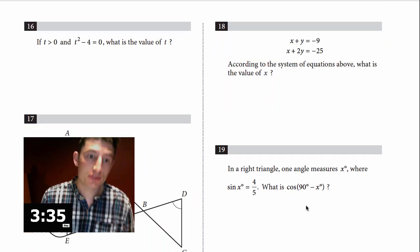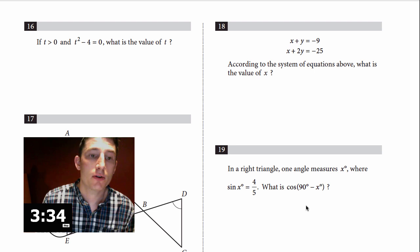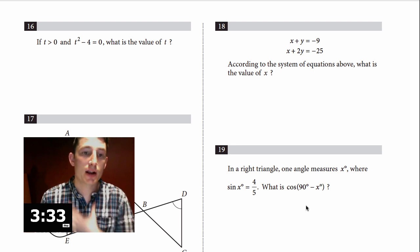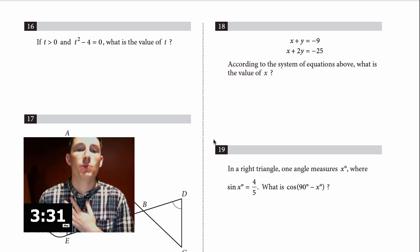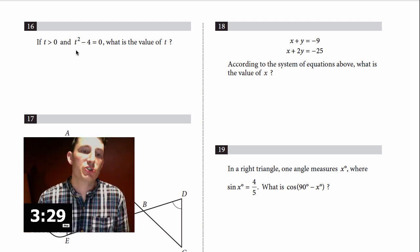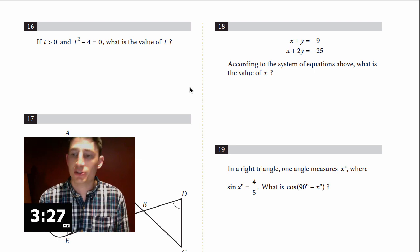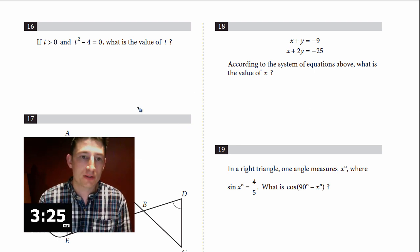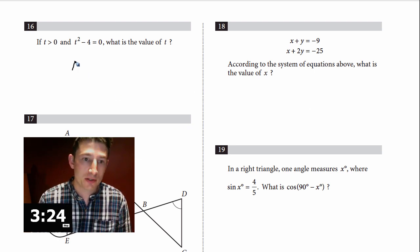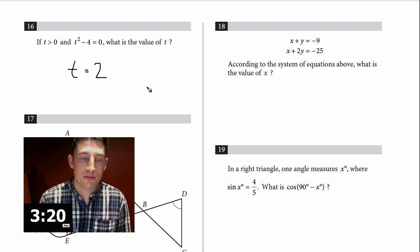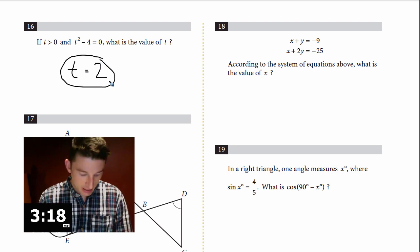Number 16: if T is greater than 0 and T² minus 4 equals 0, what is the value of T? What squared minus 4 gives zero? I'm really hoping you just know that 2 squared is 4. So the answer is T = 2. Grid that in and you'll get it right.